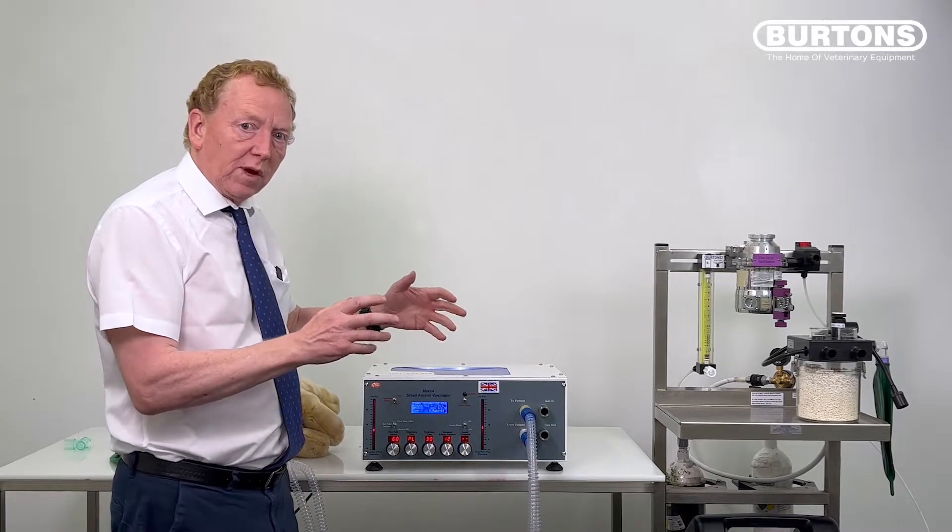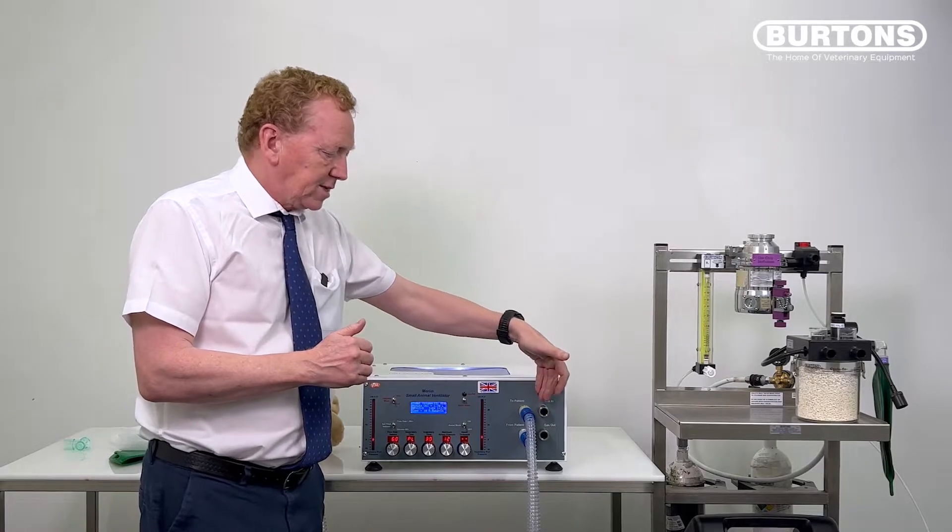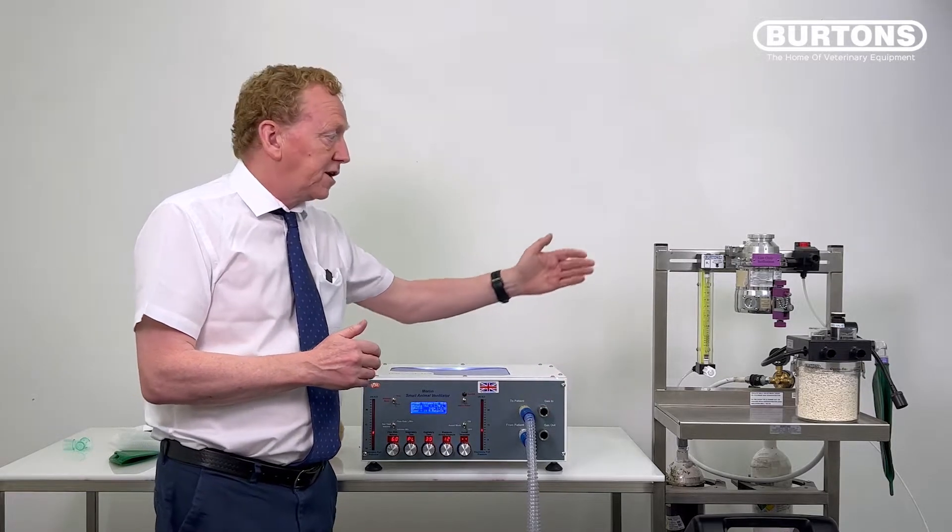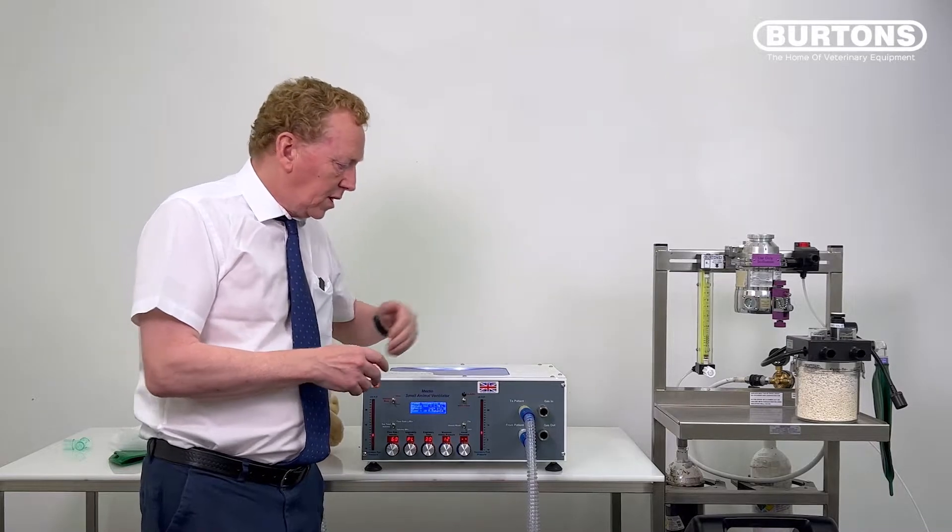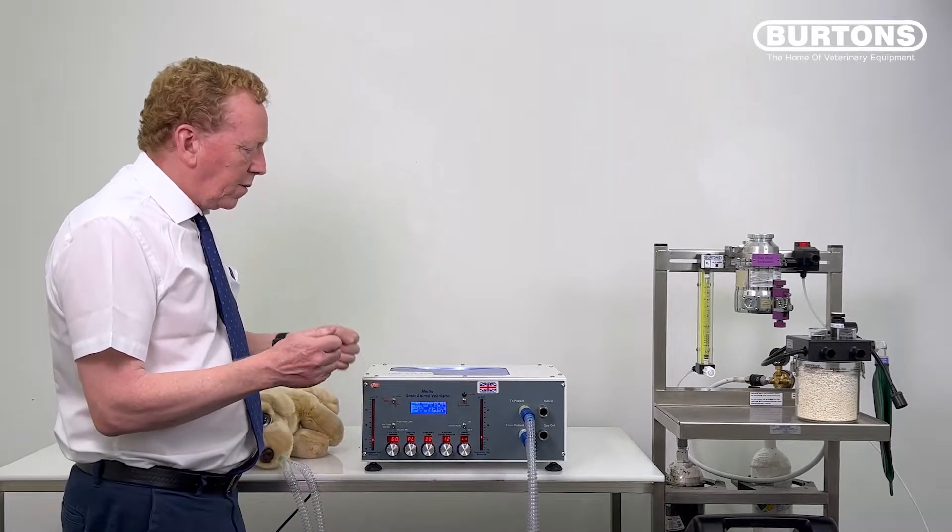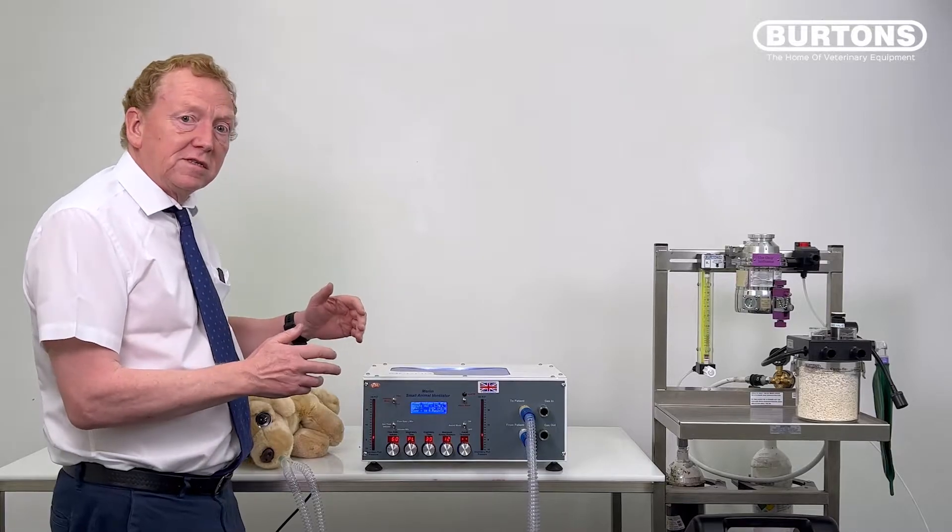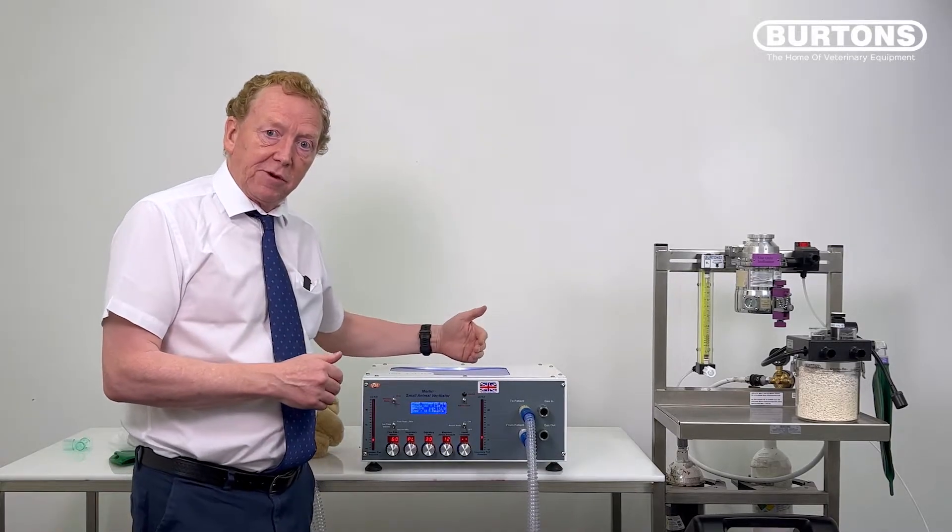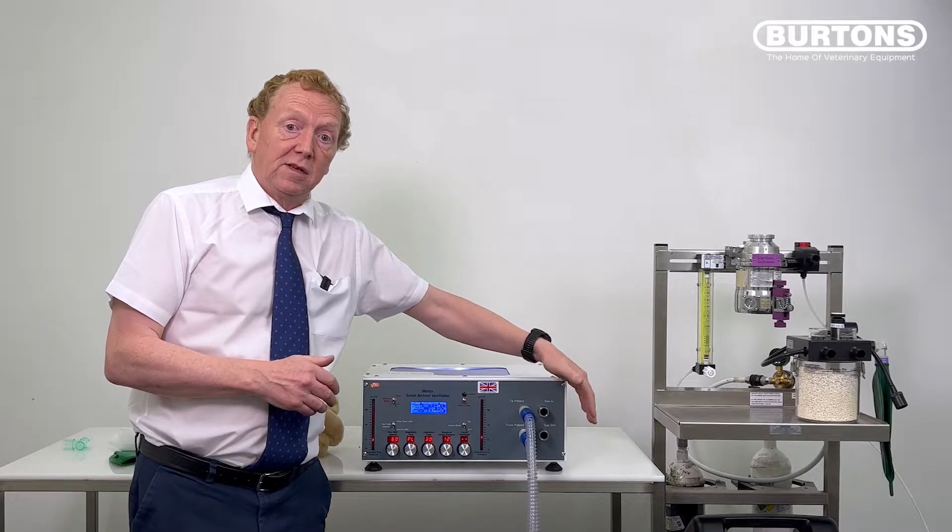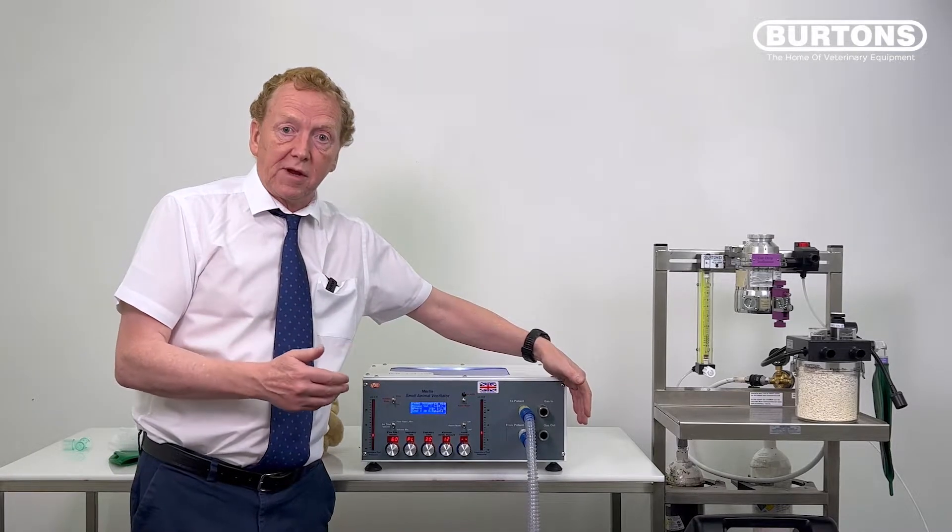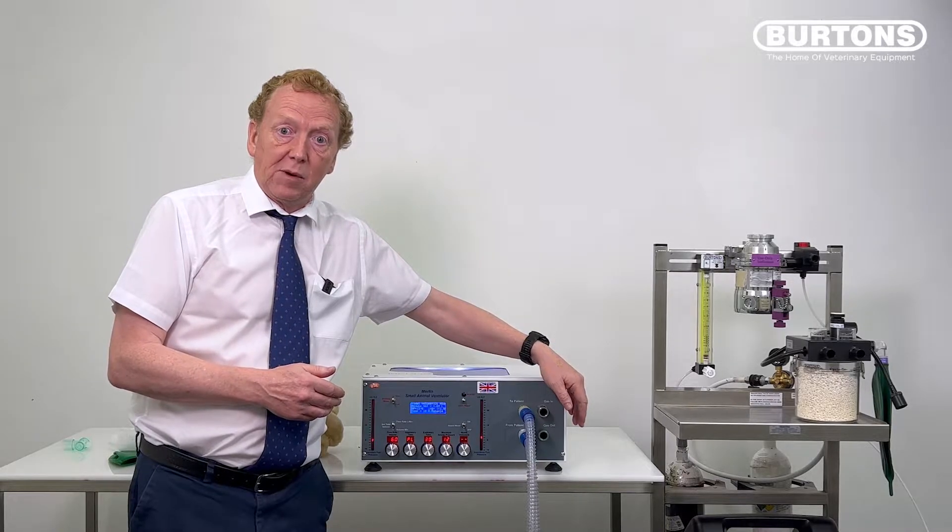So we have a period then when the gas inlet is actually closed off and that has implications if we're feeding it from the fresh gas outlet of an anaesthetic machine. So I just want to show you what will happen if we, in the first instance, prevent Merlin from filling up the gas in the expiratory phase. So I'm going to put my hand over this gas in port, just occlude it and see what happens. And I suspect we're going to find we get a nasty gas inlet blocked message.